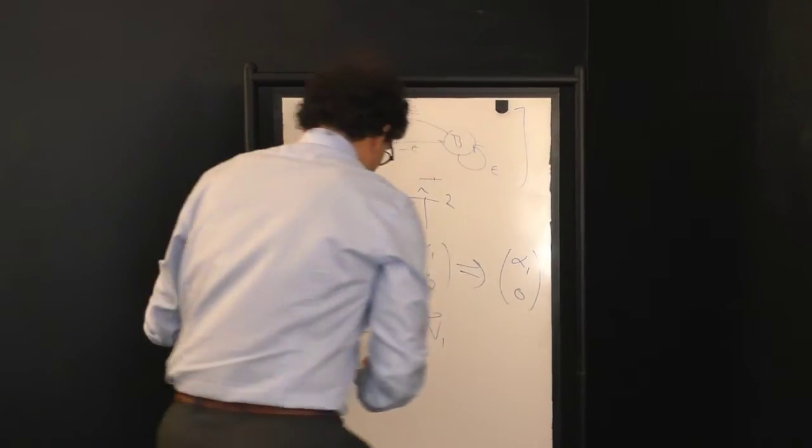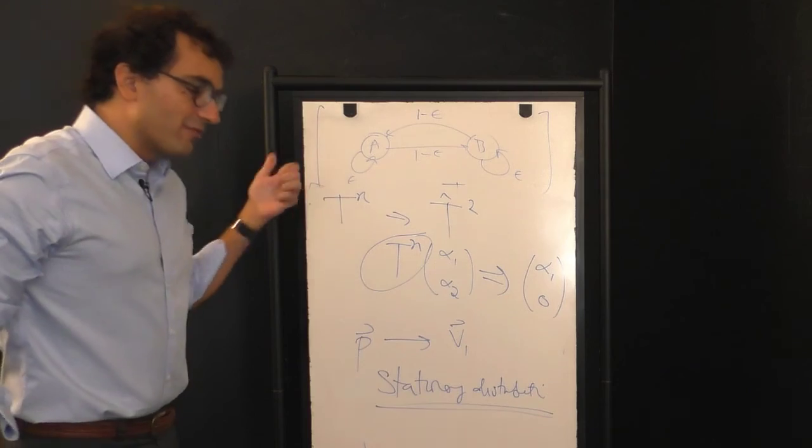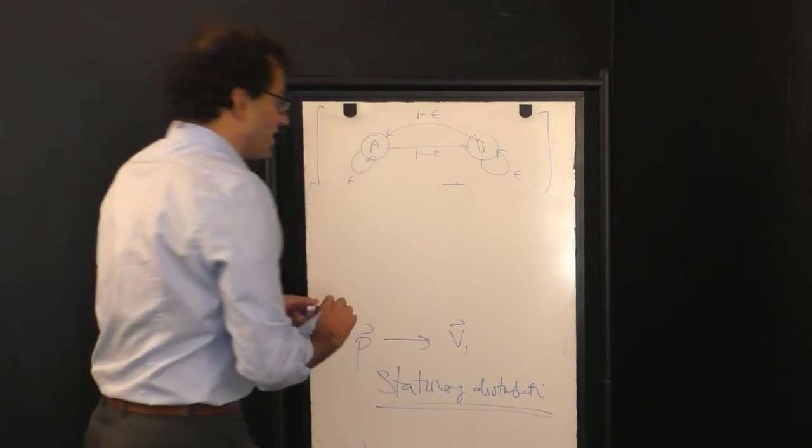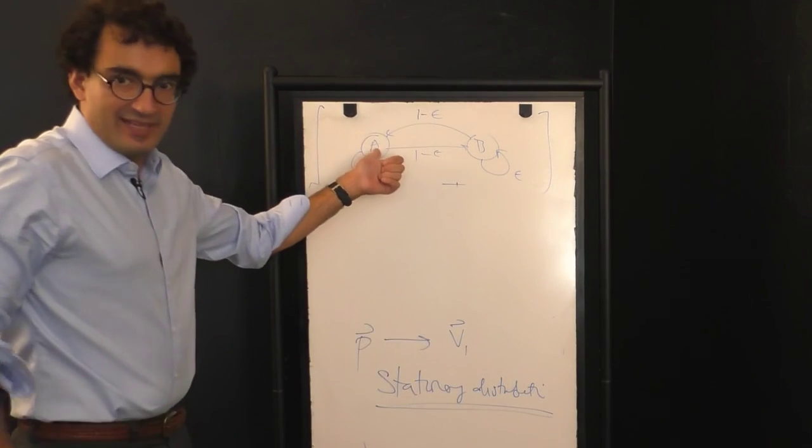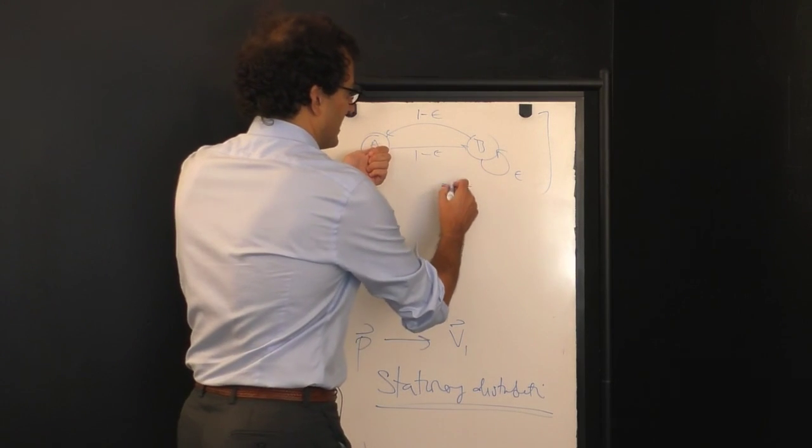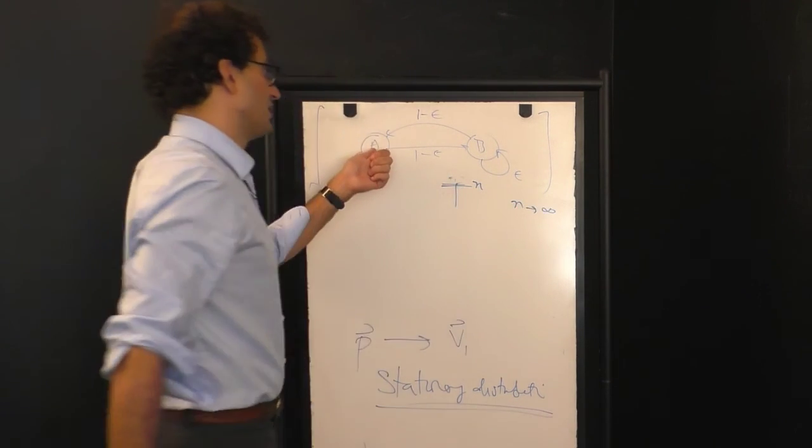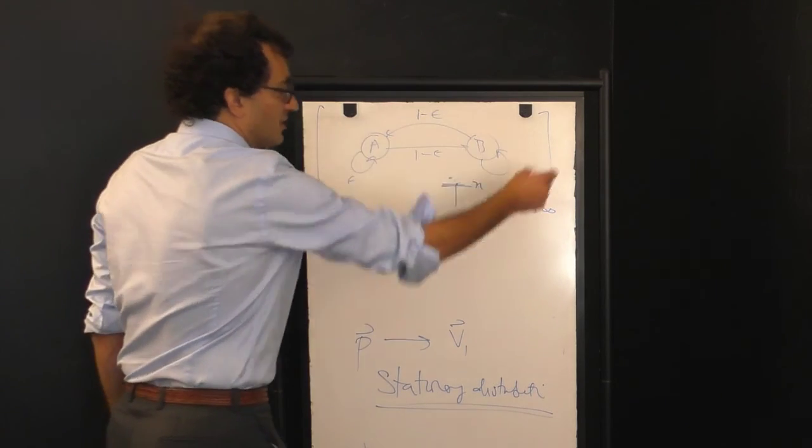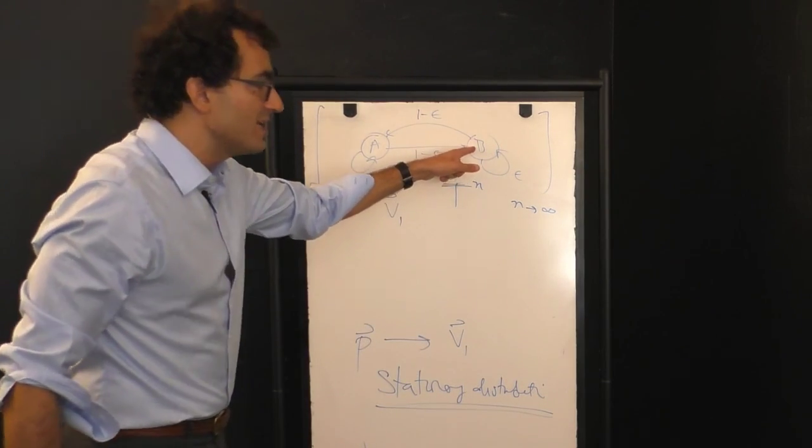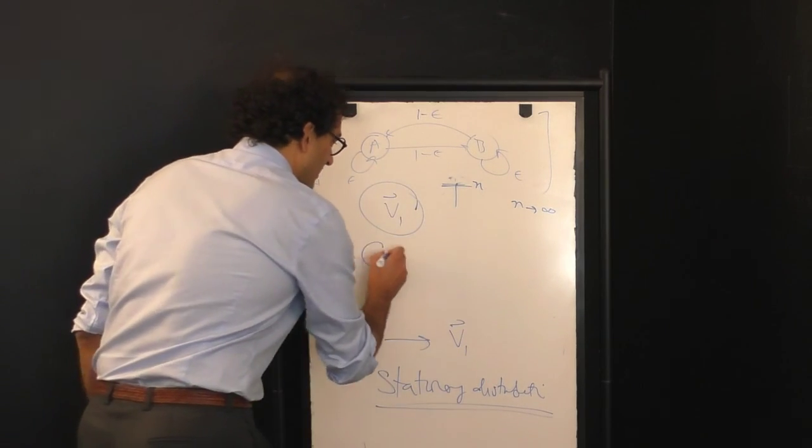That first eigenvector has a special name, it's called the stationary distribution. It's called the stationary distribution of the original stochastic matrix. And so now we know that no matter what you put in, let's say if you begin entirely in state A, if the system has been coarse-grained enough, after one coarse-grained time step, using the evolution operator T to the N, as N gets very large, at the next time step you will go to a unique probability distribution given by V1.